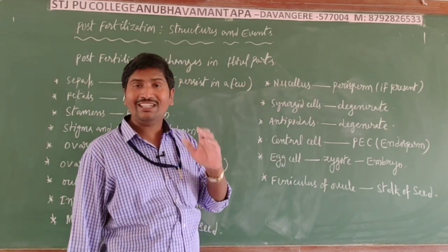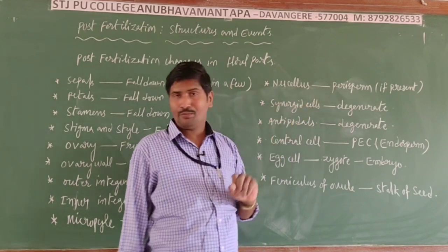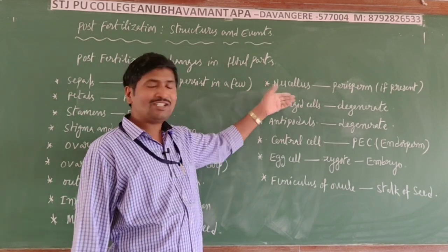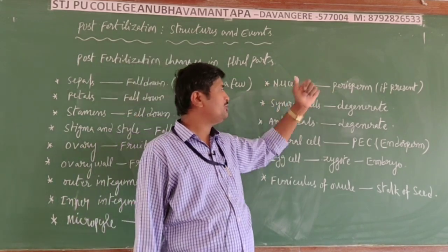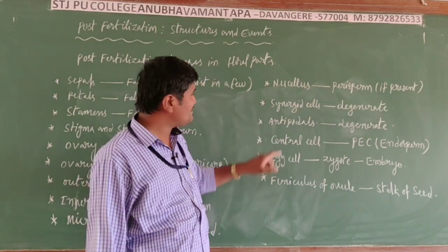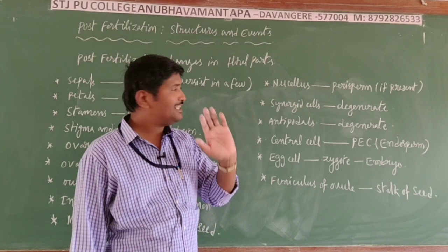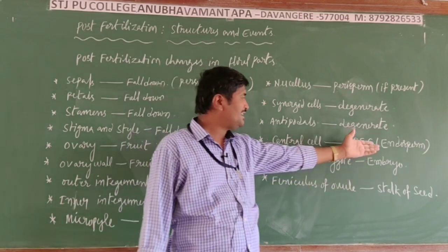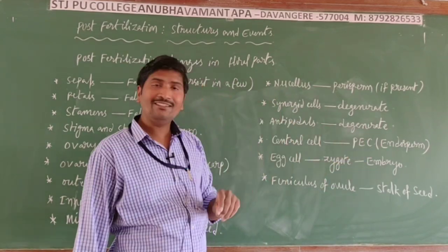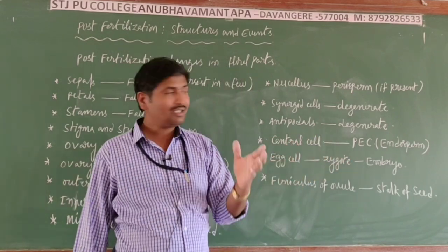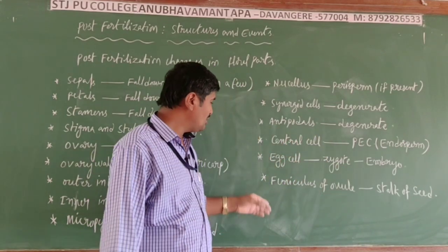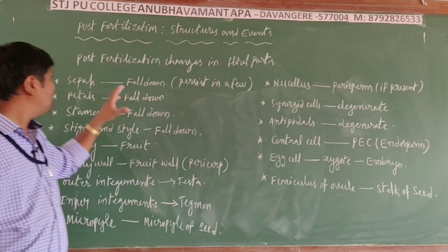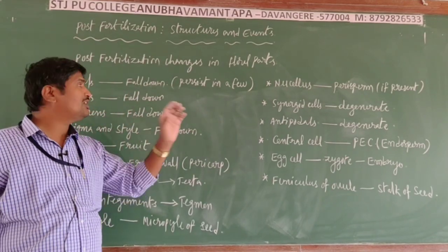The nucellus, if present, is developed into the perisperm; generally it degenerates. Synergid cells and antipodal cells both degenerate after fertilization. The central cell develops into the primary endosperm cell, which matures into the endosperm. The egg cell develops into the zygote and further into the embryo. The funiculus of the ovule develops into the stalk of the seed.